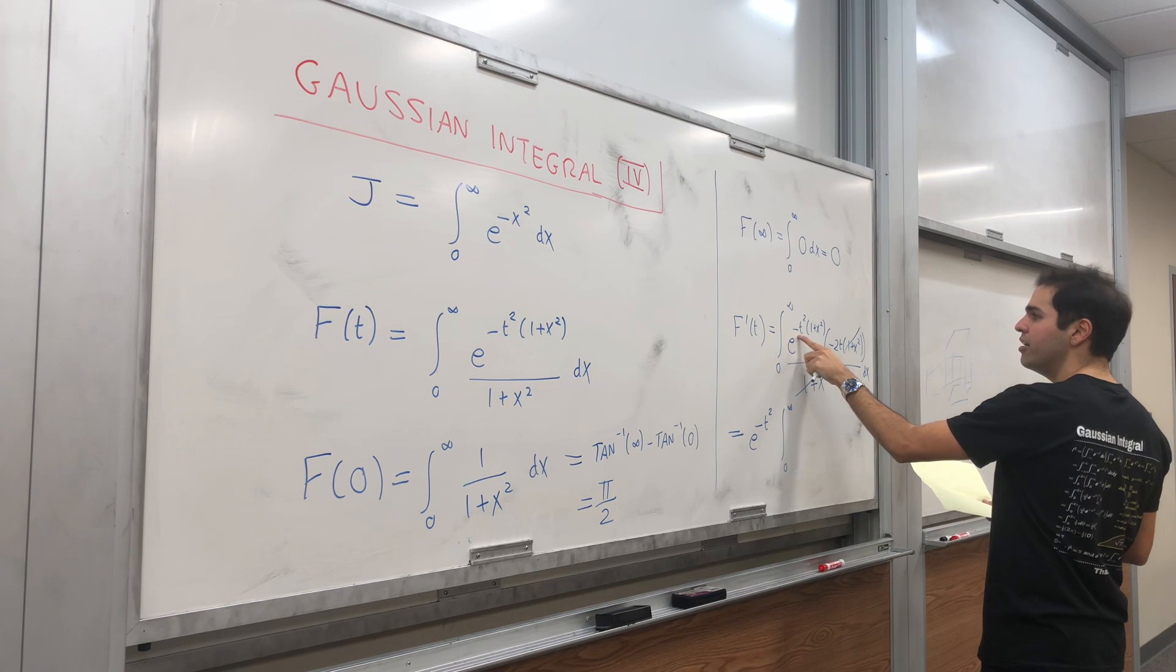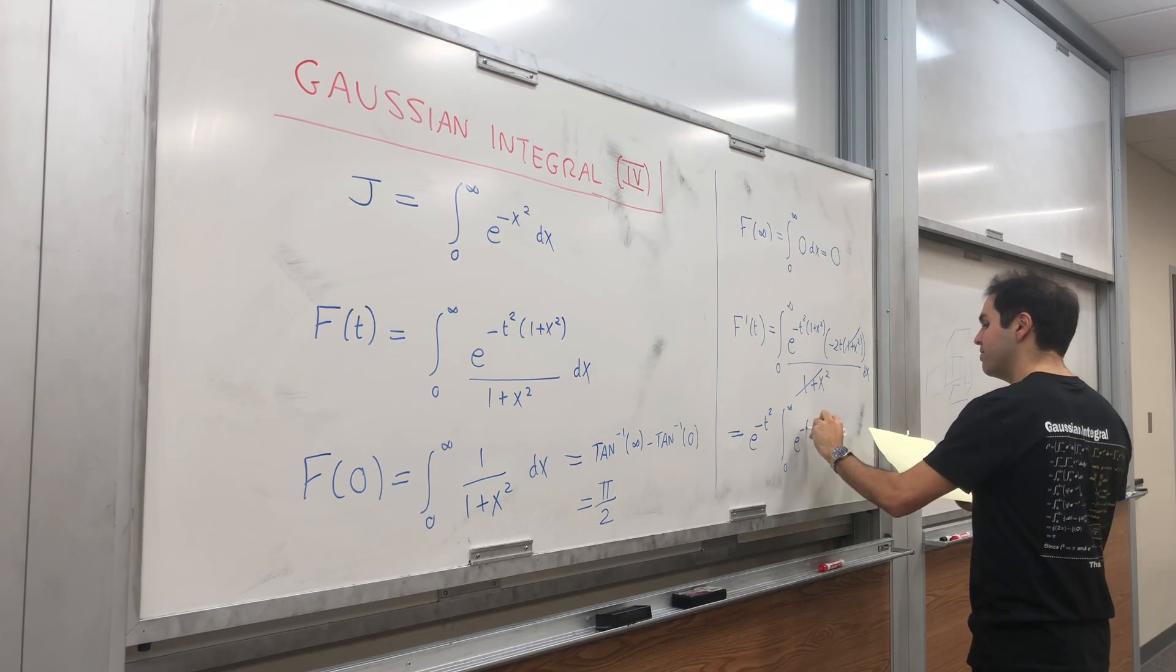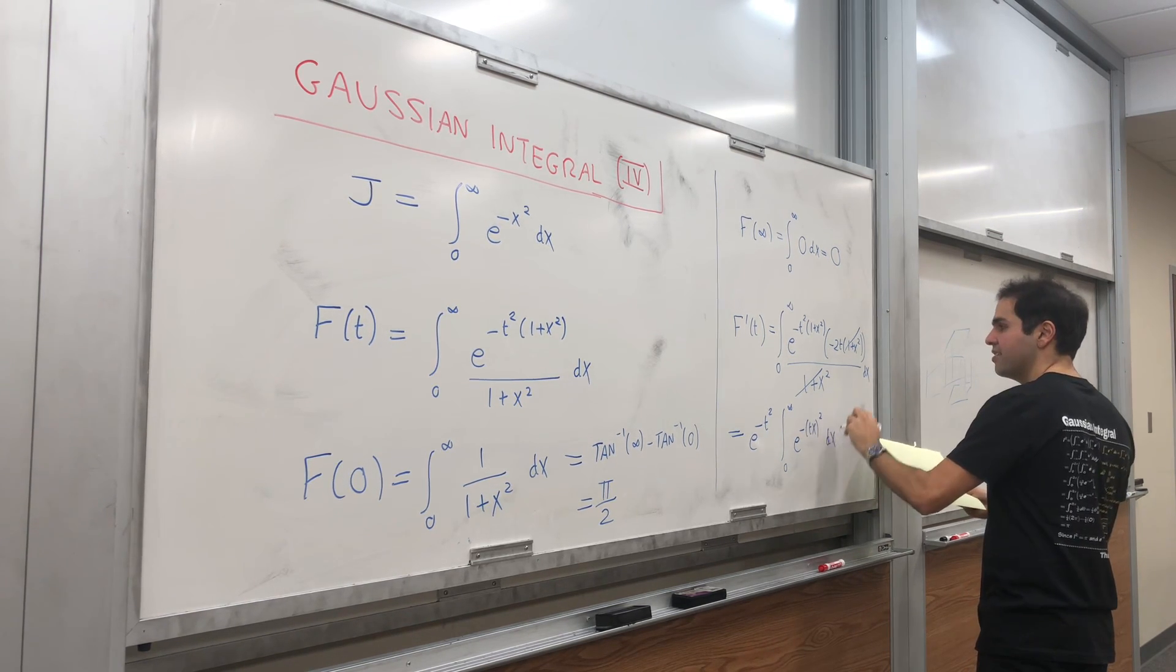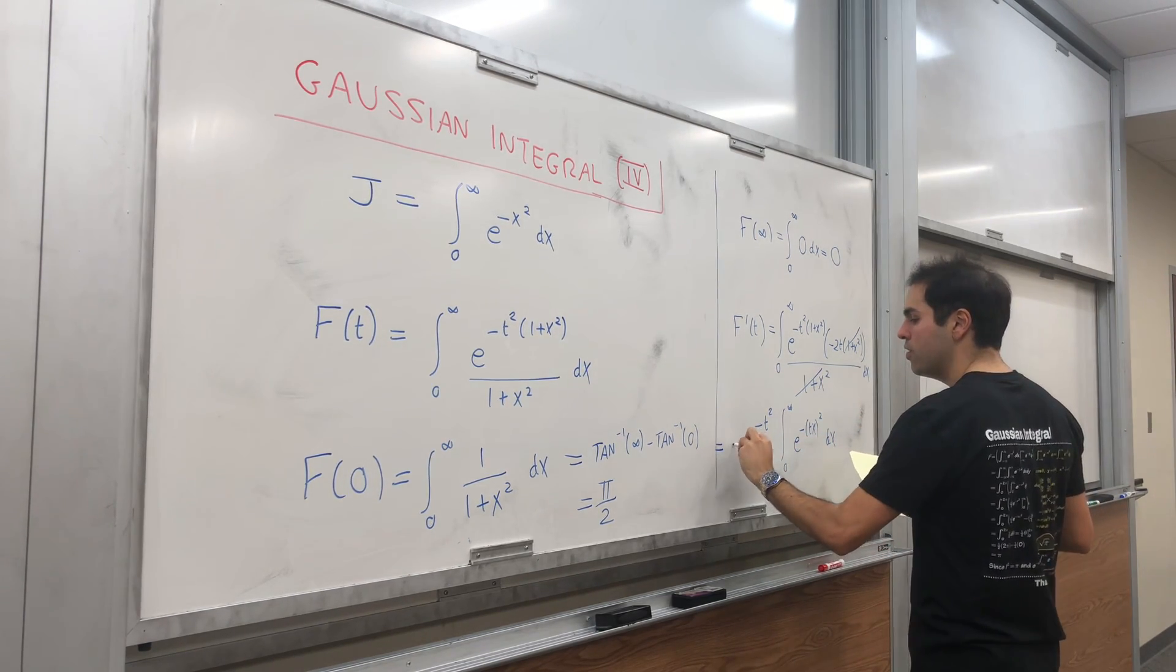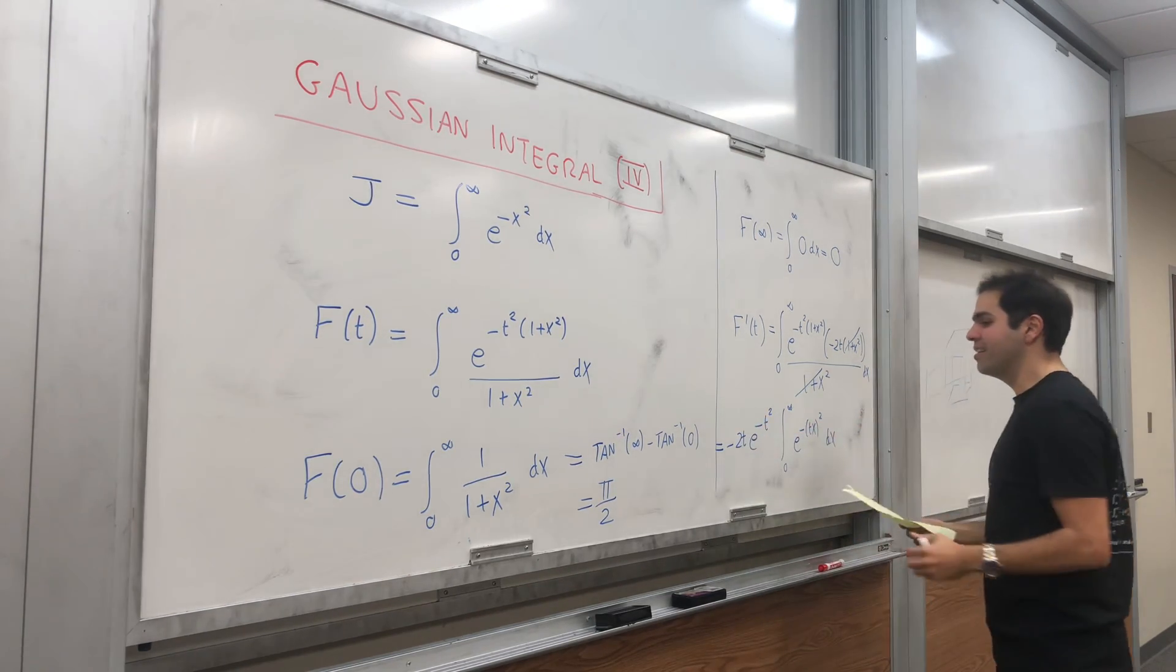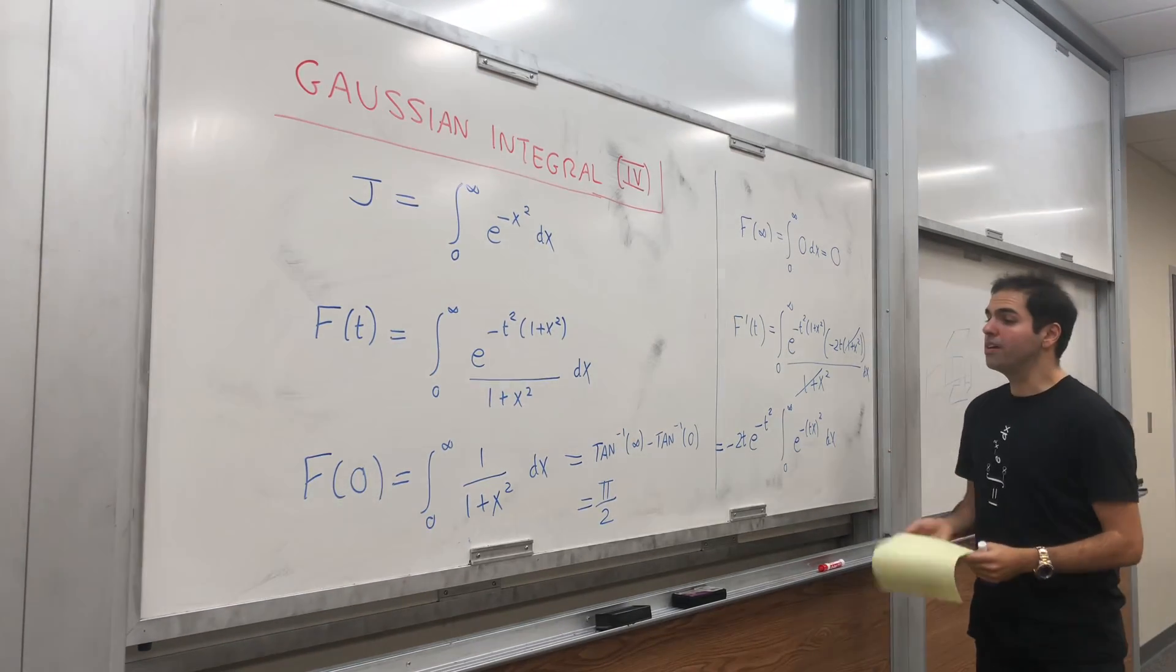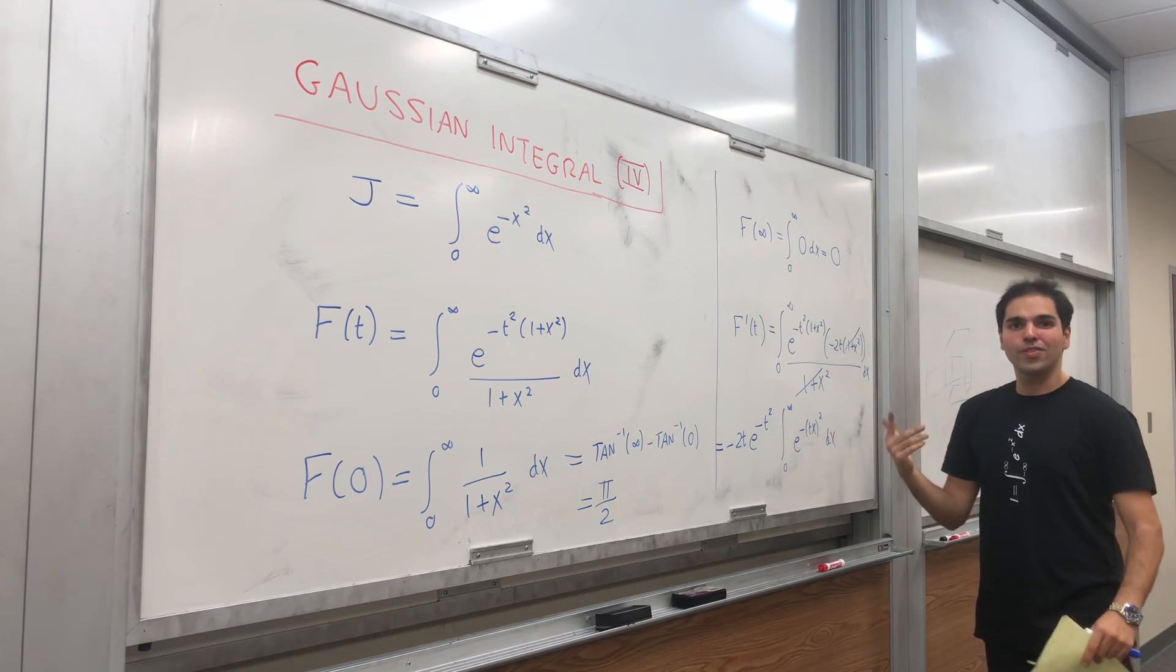And then e of negative t squared x squared, which we can just write as e of negative tx squared dx. And this term minus two t, which you can just pull outside because it doesn't depend on x at all. And notice this just calls for u sub.